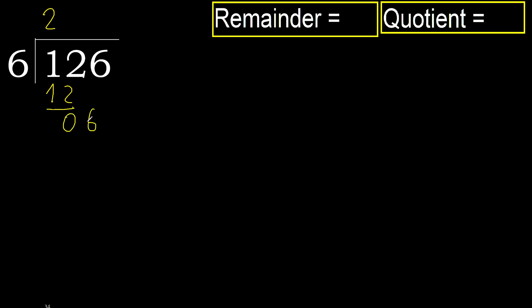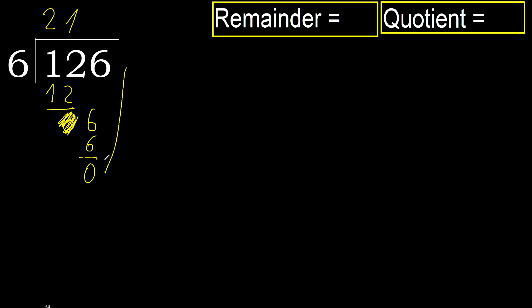Next, bring down 6. 6 multiplied by 1 is 6, is not greater. Ok, subtract — 0. Next, there is no more number, therefore finish.